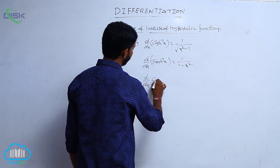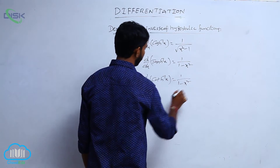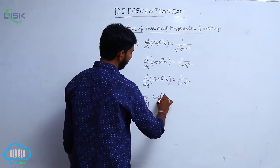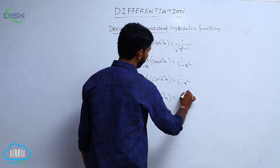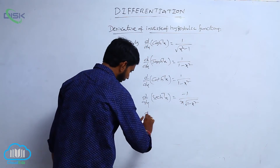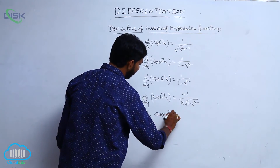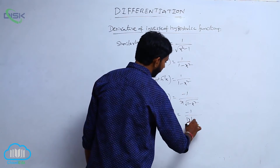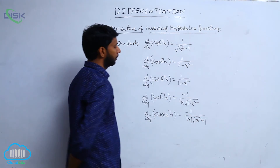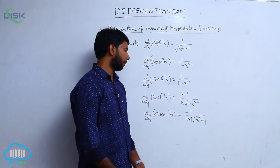d by dx of sech inverse x is equal to minus 1 by x into root of 1 minus x square. And d by dx of csch inverse x is equal to minus 1 by mod x into square root of x square plus 1.